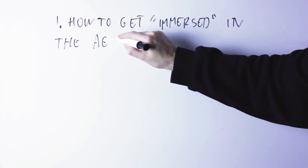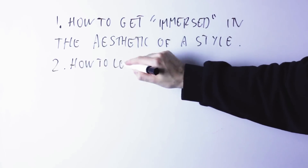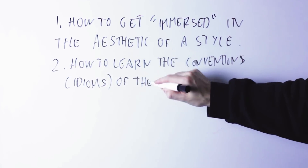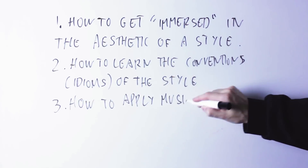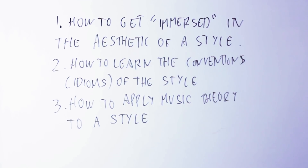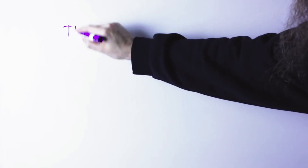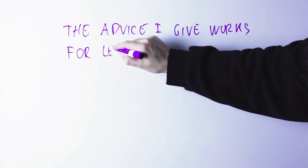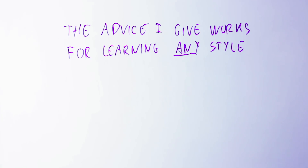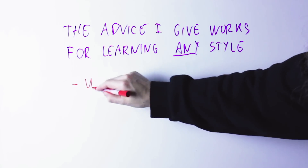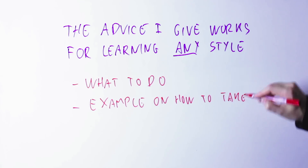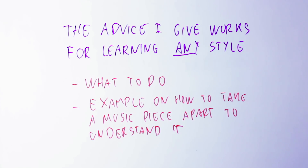In this video we're going to see how to get immersed into the aesthetic of a specific style, how to learn the conventions of the style so that you can use them in your own music, and how to learn the theory of a style and how the theory applies in that style in a way that helps you composing in that style. In a moment we'll switch to a video where a student asks me how to compose in the neoclassical metal style. If this is not your style, that's cool — the answer I give applies to many different styles, but it's helpful to have a specific example.